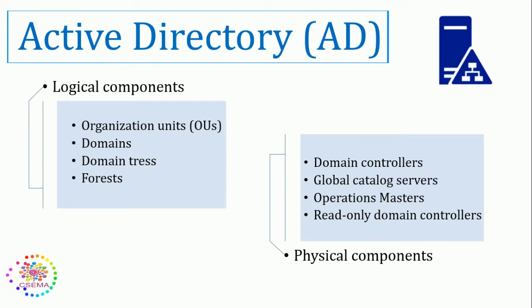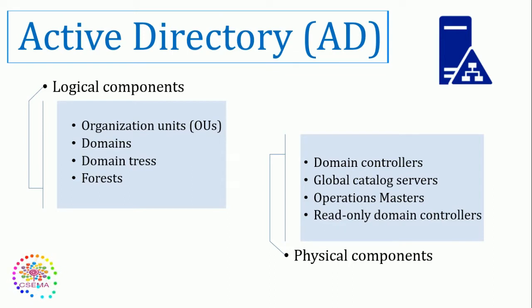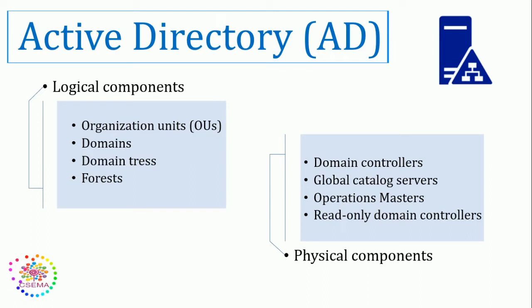When we talk about the components of Active Directory, Active Directory is made up of two components: logical components and physical components. When you first hear Active Directory, you most likely focus on the logical components that make up Active Directory. The logical components, which administrators create, organize, and manage, include organizational units, domains, domain trees, and forests. Physical components are domain controllers, global catalog servers, operations masters, and read-only domain controllers. Whatever we have in the form of a server is called a physical component, and whatever we create and manage for our users comes under logical components.